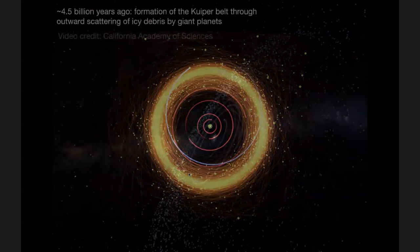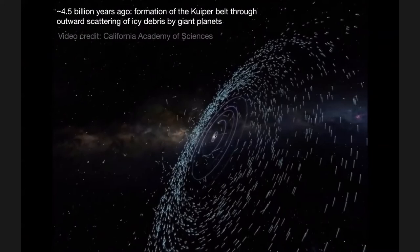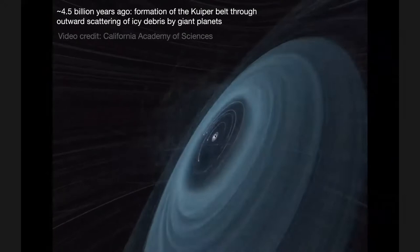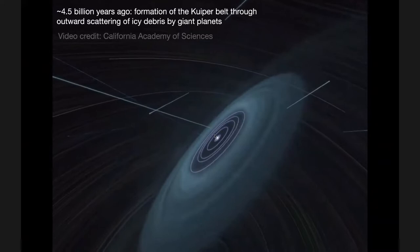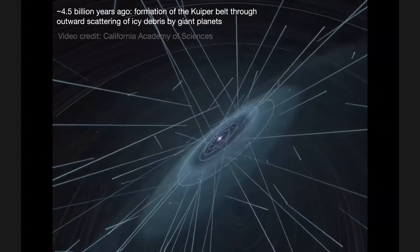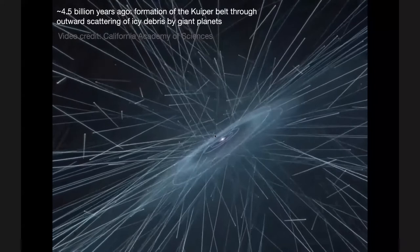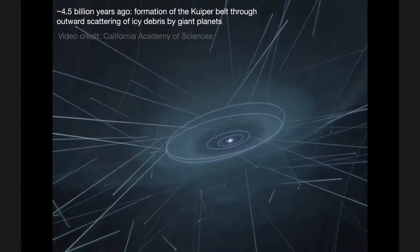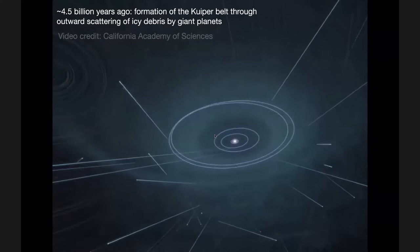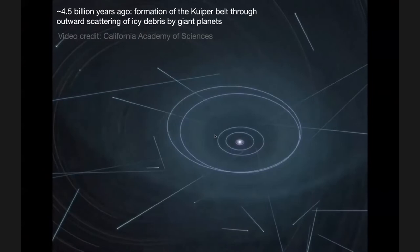In particular, one of the things that has become very clear by studying the dynamical structure of the Kuiper belt is that the planets did not start out where they are today. Instead, the planets formed in a more compact configuration and underwent a transient period of dynamical instability. So what you're seeing now is a pretty cool movie, but it's also the results of an actual simulation where the planets start out in a more compact configuration encircled by a 20 Earth mass disk of icy debris.